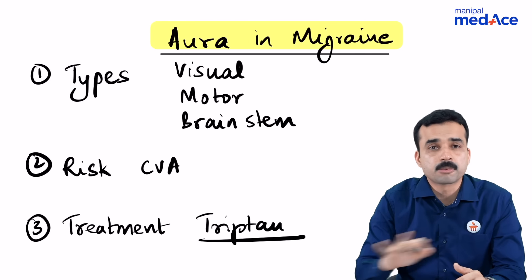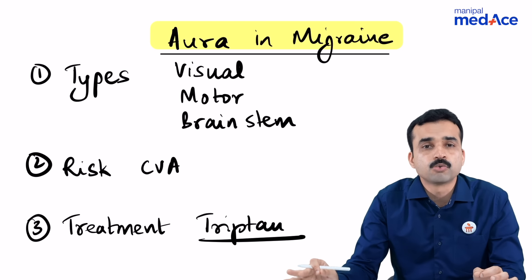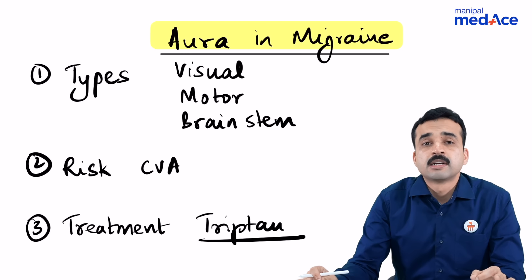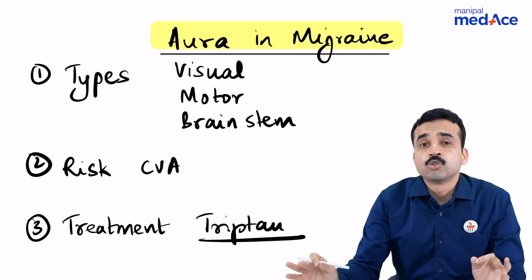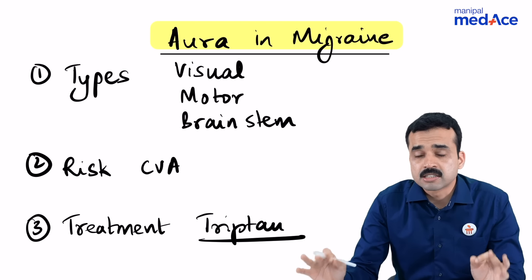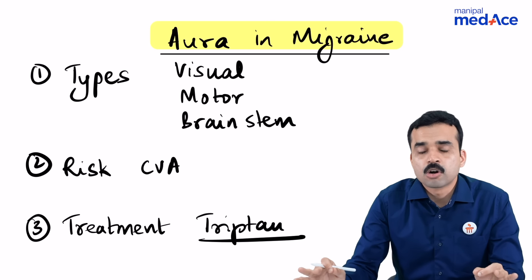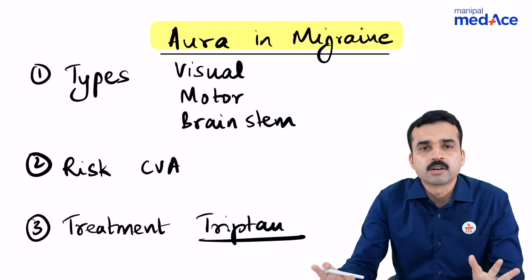If you give a triptan during the aura, it will not be effective. You need to wait for the headache to start. You need to give triptans as early as possible in migraine, but not before the headache starts — not during the aura.